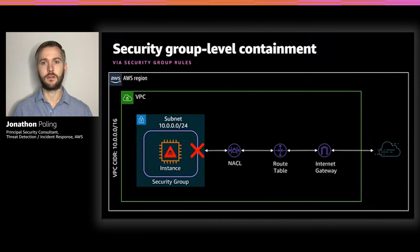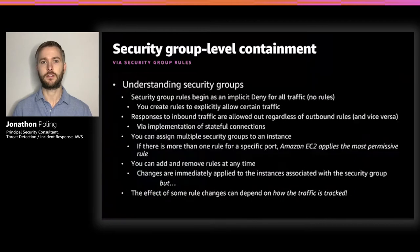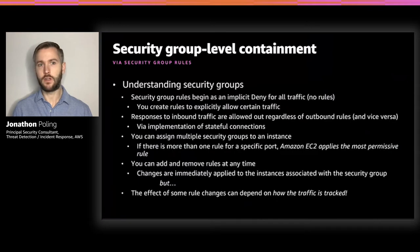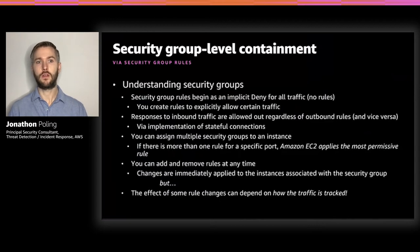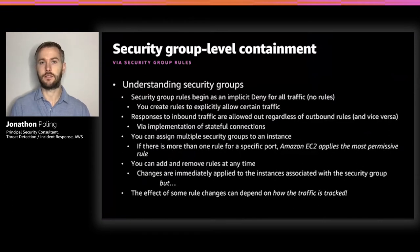We'll begin with security group level containment, leveraging security group rules to contain a singular instance or set of specific instances we suspect to be compromised. Security group rules begin as an implicit deny for all traffic when no rules are present. You then create rules to allow certain traffic. Responses to inbound traffic are allowed out regardless of outbound rules and vice versa — this is how they implement stateful connections. You can assign multiple security groups to an instance, and if there's more than one rule for a specific port, Amazon EC2 applies the most permissive rule.